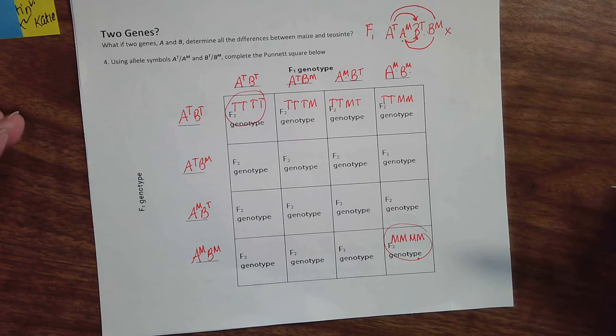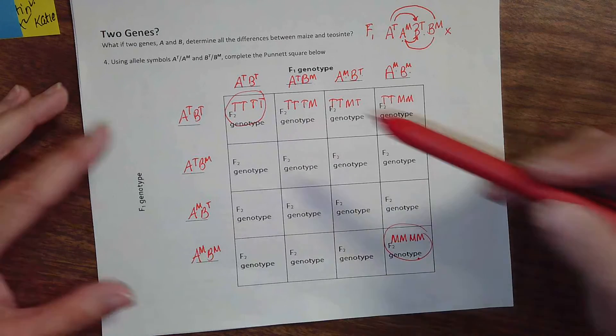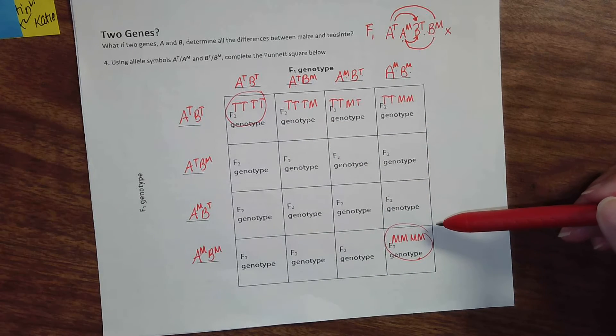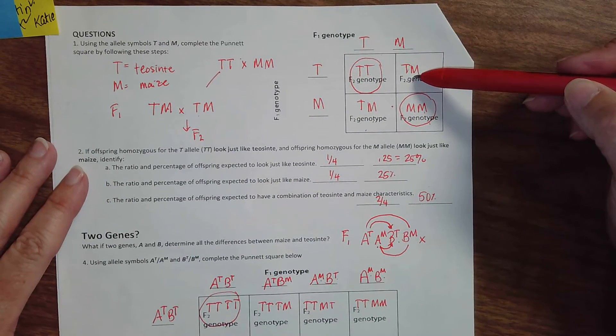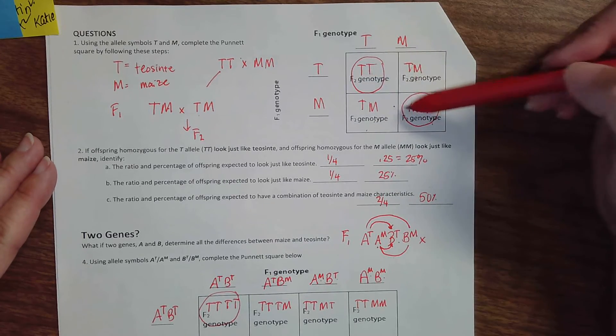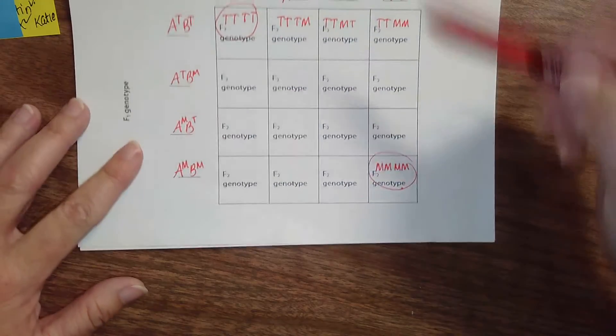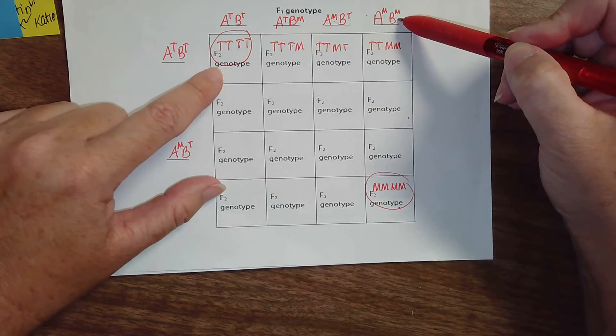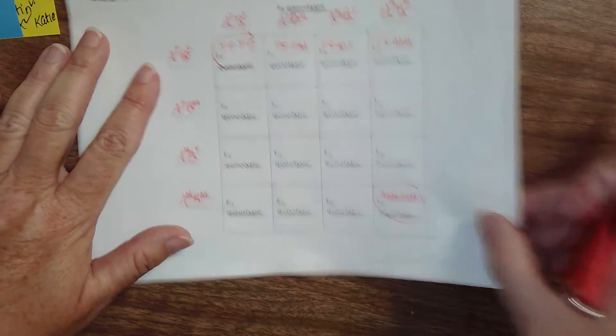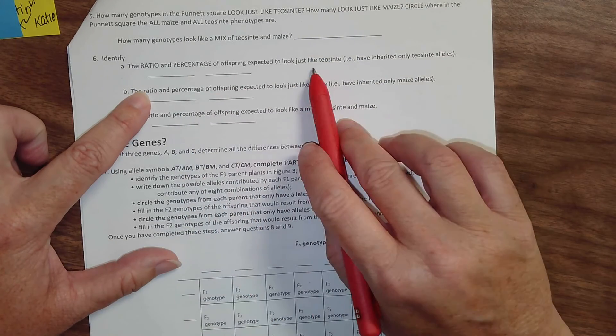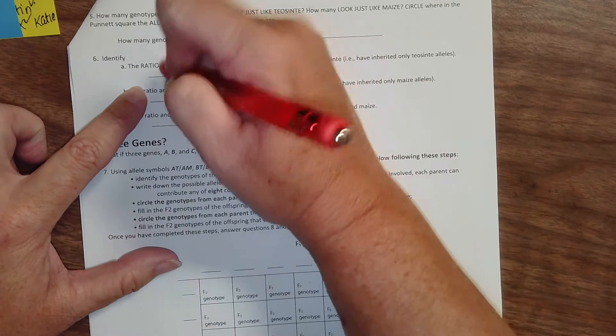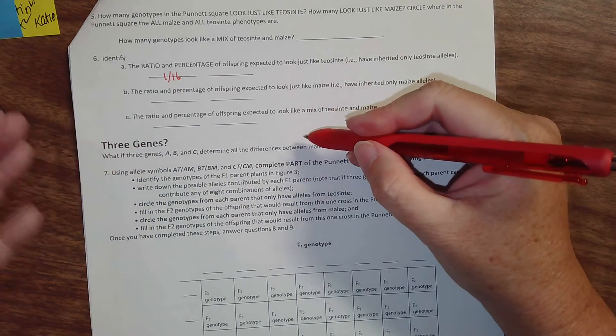Now, when the scientist, Beadle, did his experiment with real corn and he grew 50,000 corn plants, he found that one in 500 looked like Teosinte. One in 500 looked like maize. So we haven't quite gotten to that 500 yet. If it had been one gene controlling all the changes between Teosinte and corn, then we would have seen one out of four look like Teosinte. If it had been two genes, A and B, we would have seen one out of 16 plants look just like Teosinte. So on this side, you're going to fill in your ratios just like you did before. The ratio that you would expect to look like Teosinte is one out of 16, and then figure out the percentage. Answer those questions on your own.